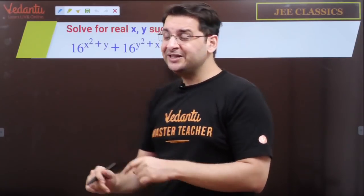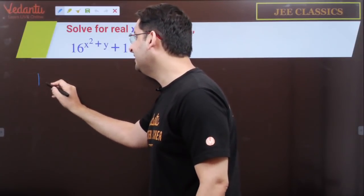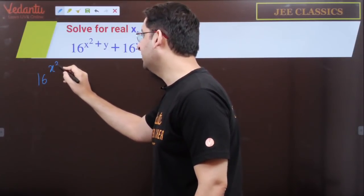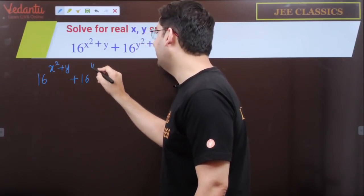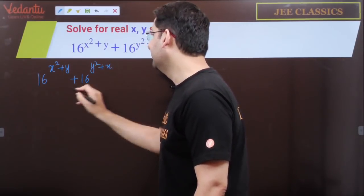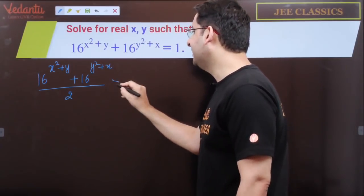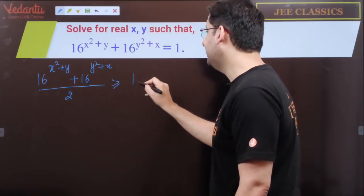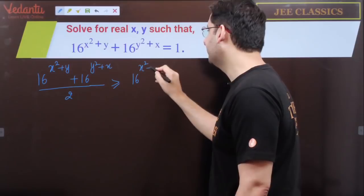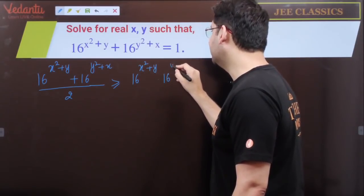So let us apply AM-GM over these two numbers. [16^(x²+y) + 16^(y²+x)]/2, the AM is greater than or equal to the GM, which would be [16^(x²+y) × 16^(y²+x)]^(1/2).